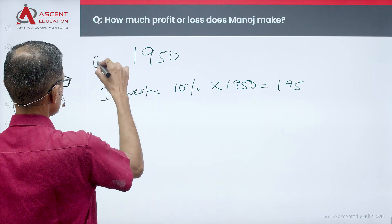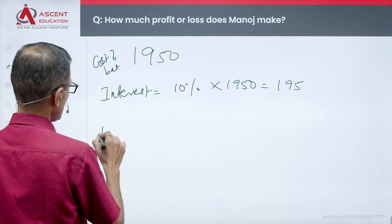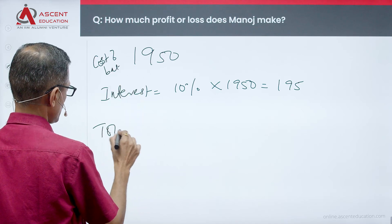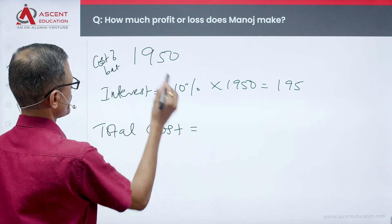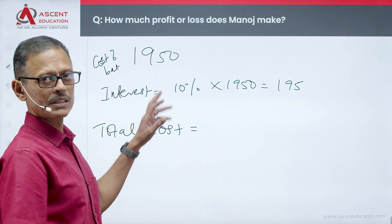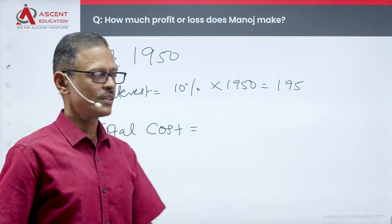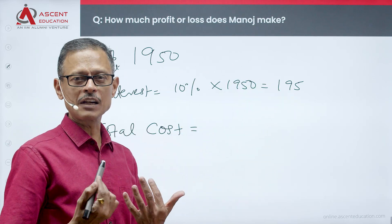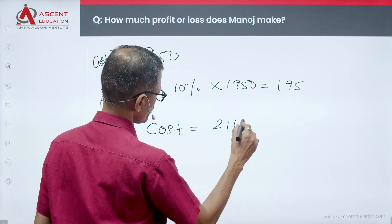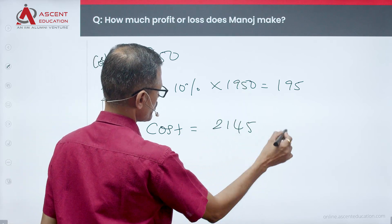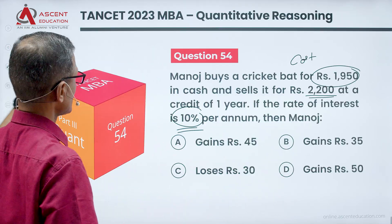So the total cost — that is, the cost of the bat plus the interest cost — comes to ₹1950 plus ₹195, which is equal to ₹2145.